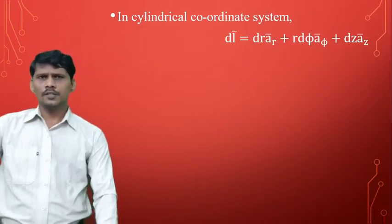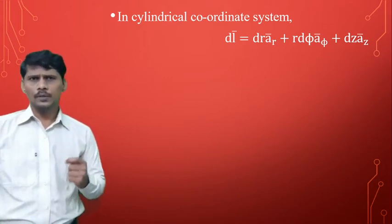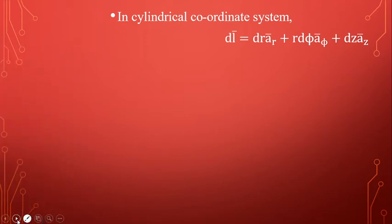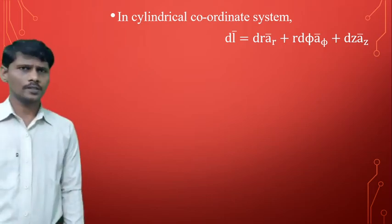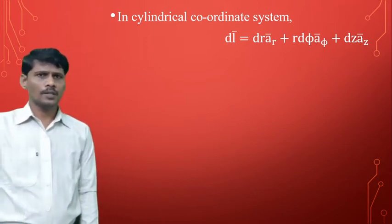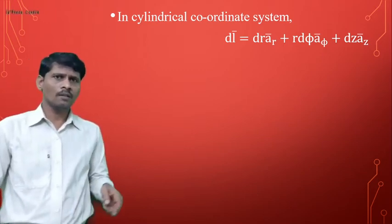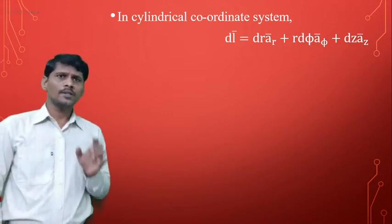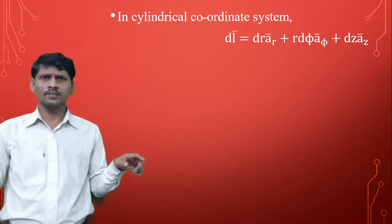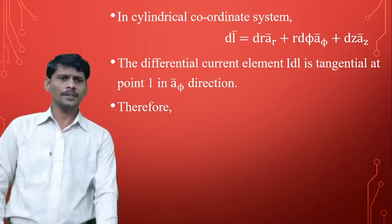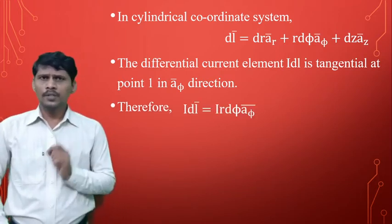In the cylindrical coordinate system, the differential length dl bar is equal to dr times ar bar plus r dφ times aφ bar plus dz times az bar. Now here on the circular loop, at any point the differential length dl bar is varying in the tangential direction, that is the aφ bar direction. Therefore the differential vector length dl bar equals r dφ times aφ bar.